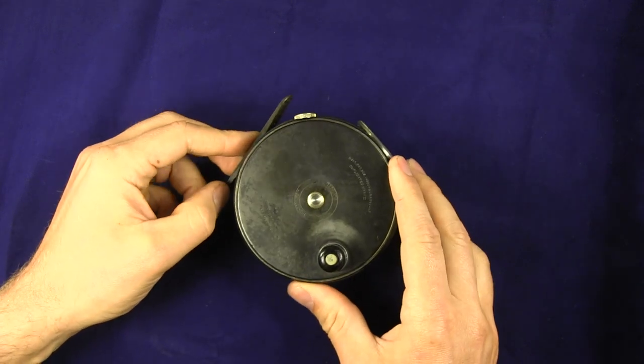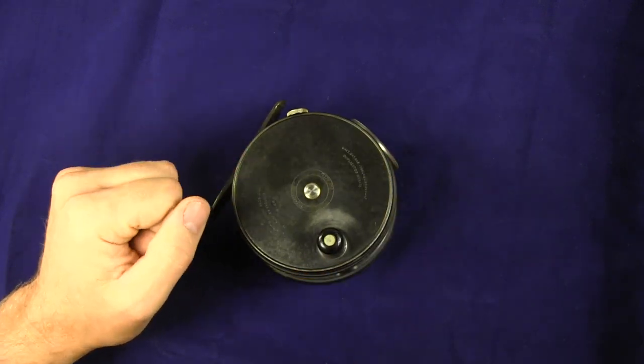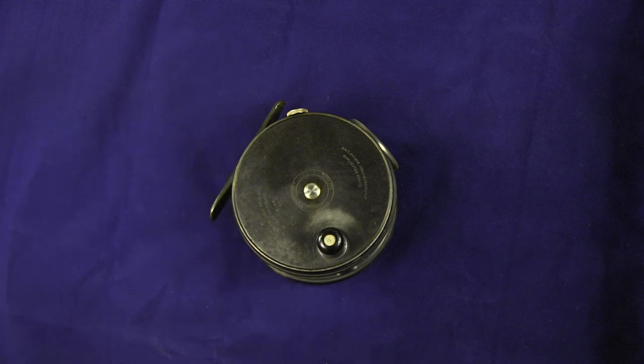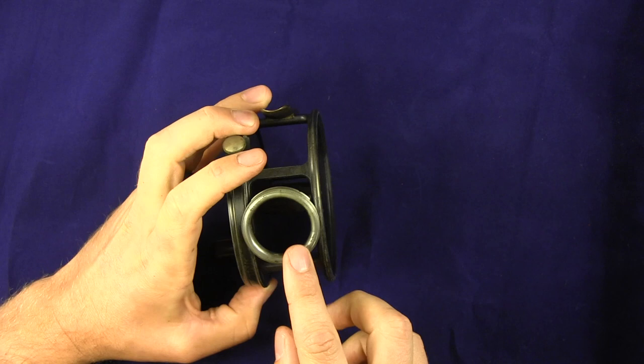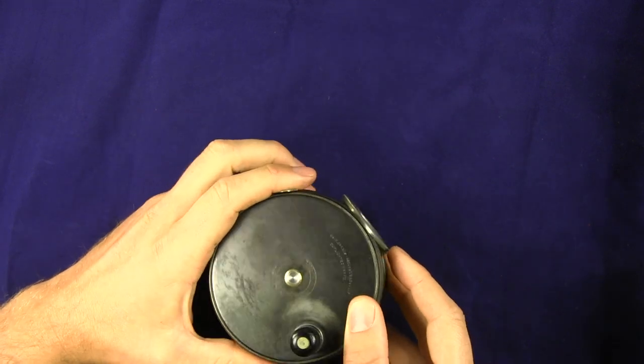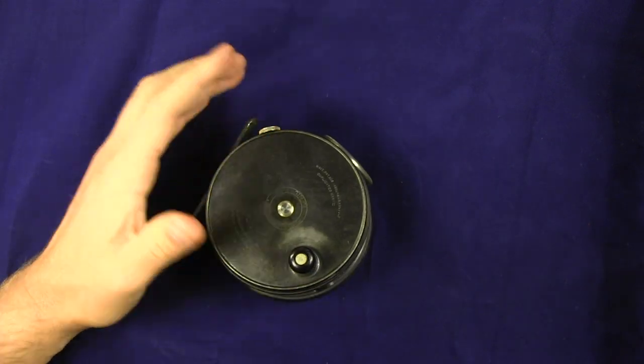So really nice example of a pre-war four inch Hardy Perfect vintage reel. If you enjoyed this video, please subscribe to my channel. Click like down below or check out some of these other videos I have on vintage Hardy reels, fly tying, or fly fishing in general. Thanks, have a good one.